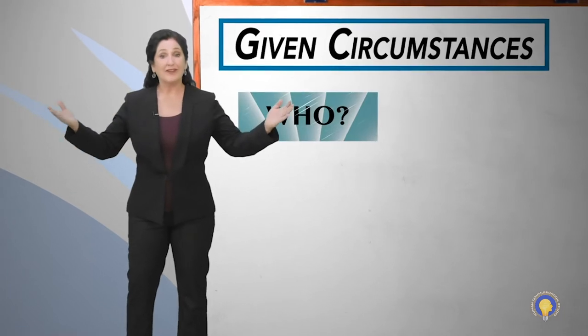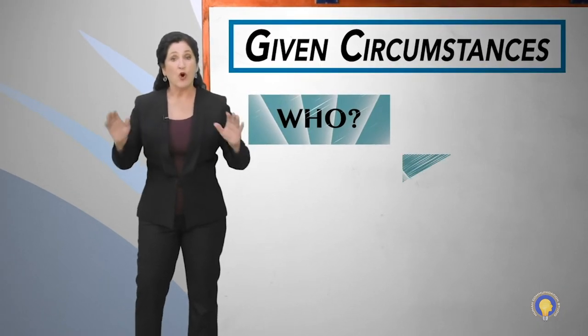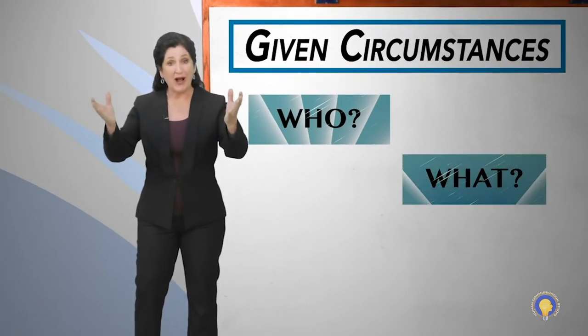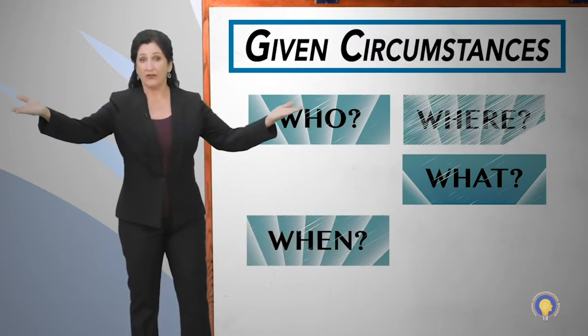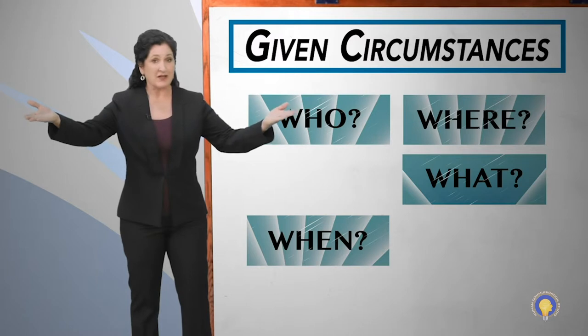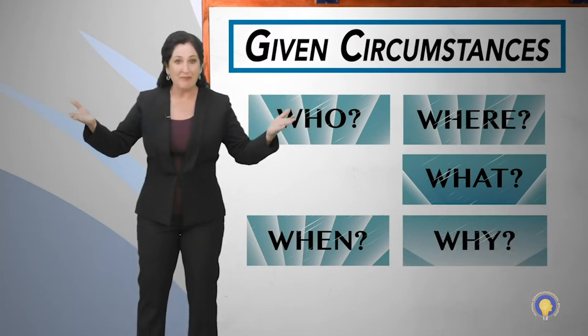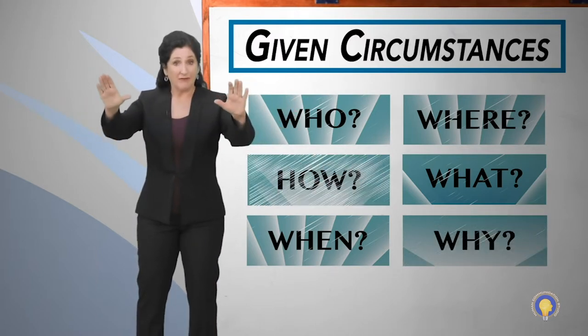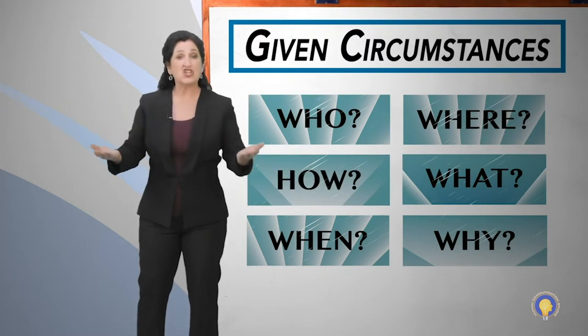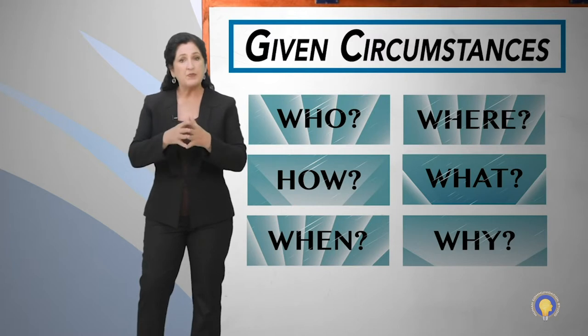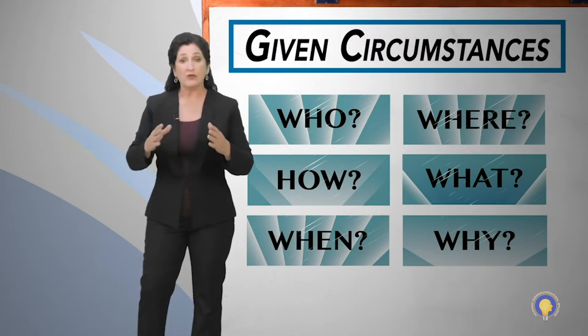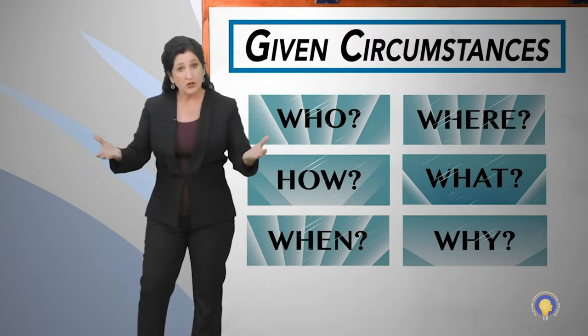Who is involved in a communication? What that communication is about? When the communication is happening? Where the communication is taking place? Why the communication needs to happen? And how the information is to be exchanged? Each of these six questions help us to recognize and plan around our given circumstances.